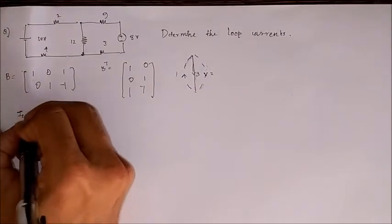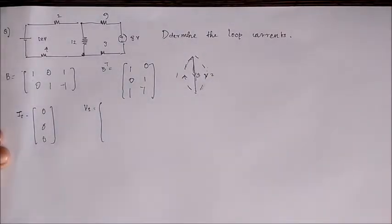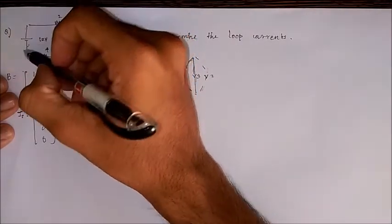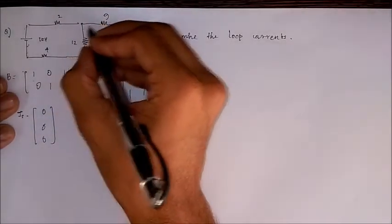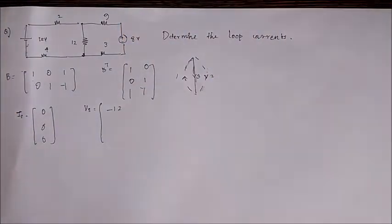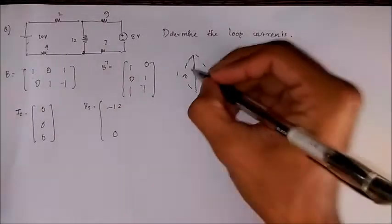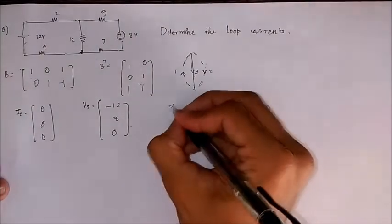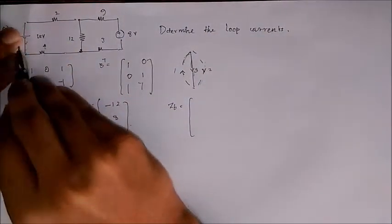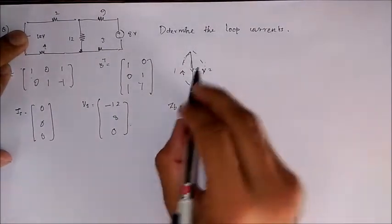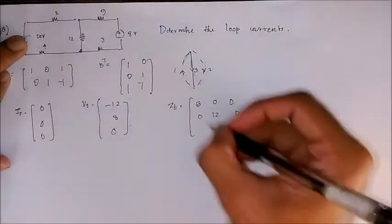As there are no current sources in this equation we can directly write it as null matrix and here Vs, the direction is towards the negative of minus 12 and thus it gets minus value. In branch 3 there is no voltage source therefore 0 and in 2 it is towards 8 plus 8. Finally the impedance matrix: for the first branch we can see that 2 and 4 are in series, that is 2 plus 4 which is 6. The second branch that is 9 and 3 in series equals 12 and the third branch is also 12.